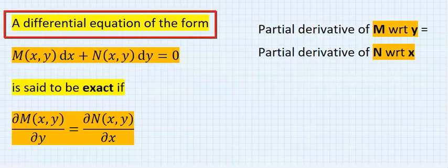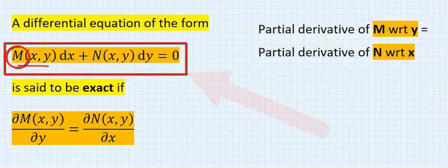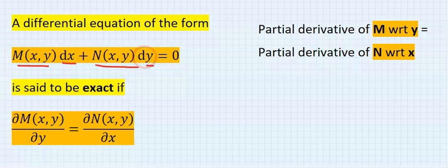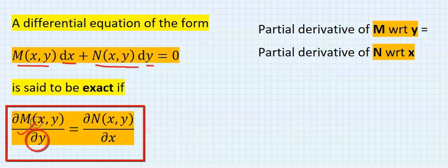A homogeneous linear differential equation of the form M(x,y) dx plus N(x,y) dy equals 0 is said to be exact if the partial derivative of M with respect to y is equal to the partial derivative of N with respect to x.